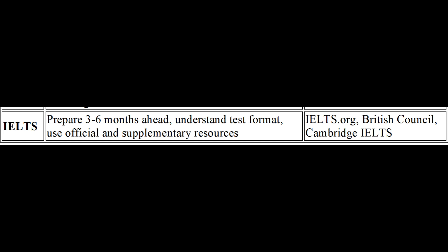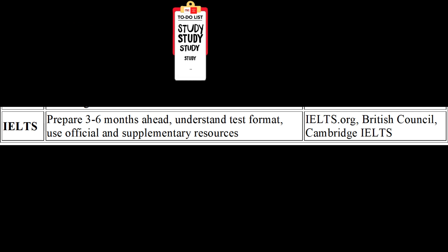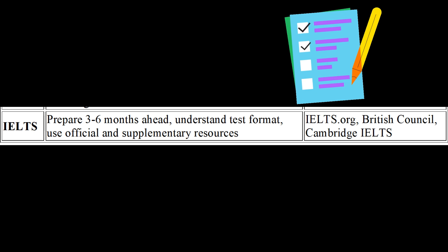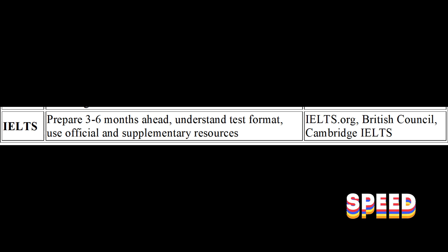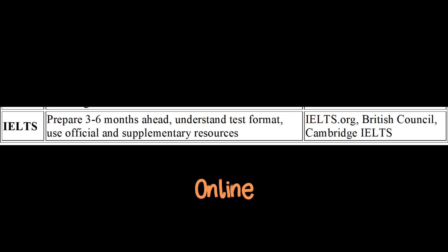IELTS Preparation — Start Early: start your preparation 3–6 months before the test and build a study plan that addresses all test sections. Understand the test format: get familiar with the test structure and question types; use practice tests and past papers. Improve language skills: practice reading, listening, speaking, and writing in various contexts. Take mock tests and review your answers to understand your strengths and weaknesses. Books: The Official Cambridge Guide to IELTS. Online resources: IELTS.org, British Council, and IDP Education.